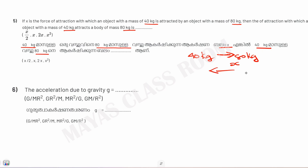Acceleration due to gravity — the equation for g is: g equals G times M divided by R squared. That is g's equation: G times M divided by R squared.